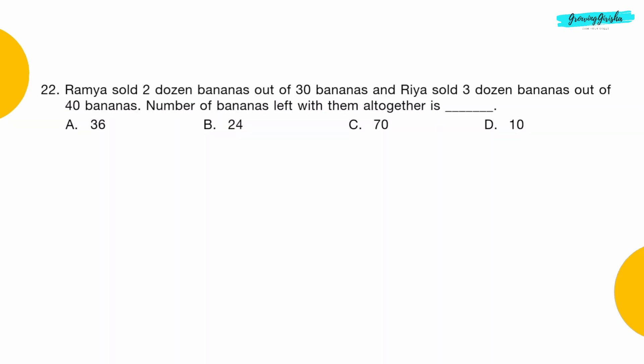Question 22: Ramya sold 2 dozen bananas out of 30 bananas and Rhea sold 3 dozen bananas out of 40 bananas. Number of bananas left with them altogether is dash. Option D: 10.